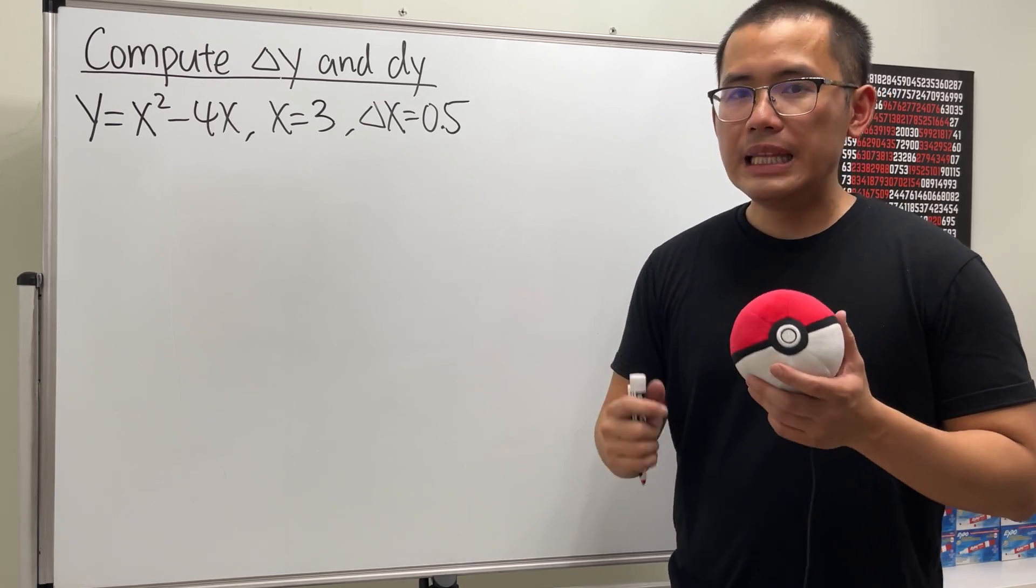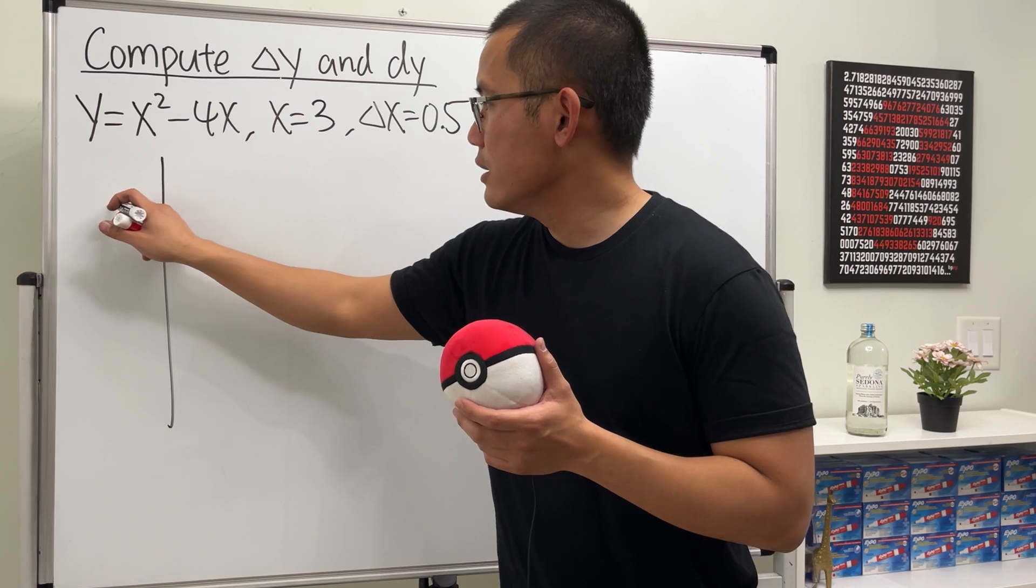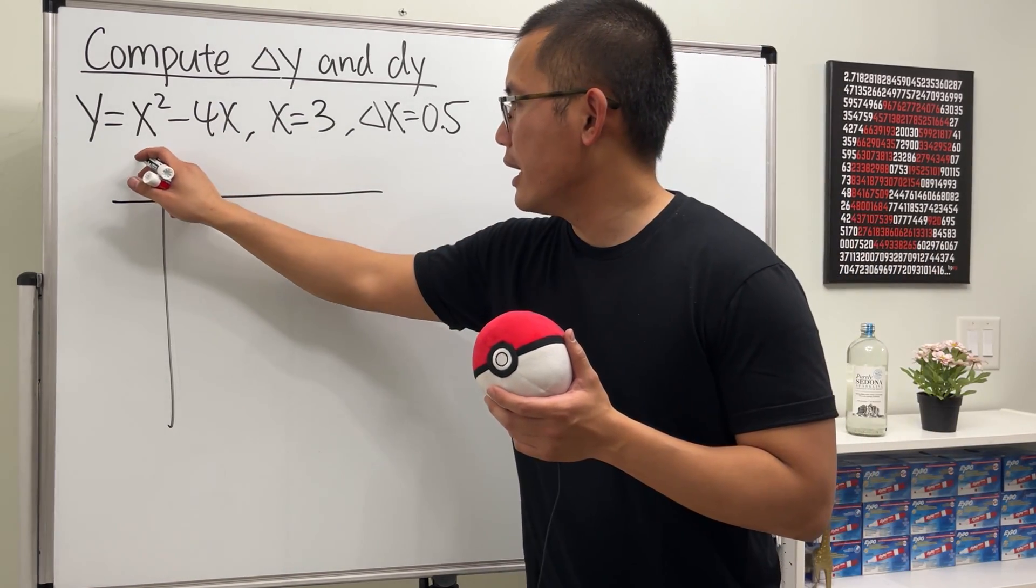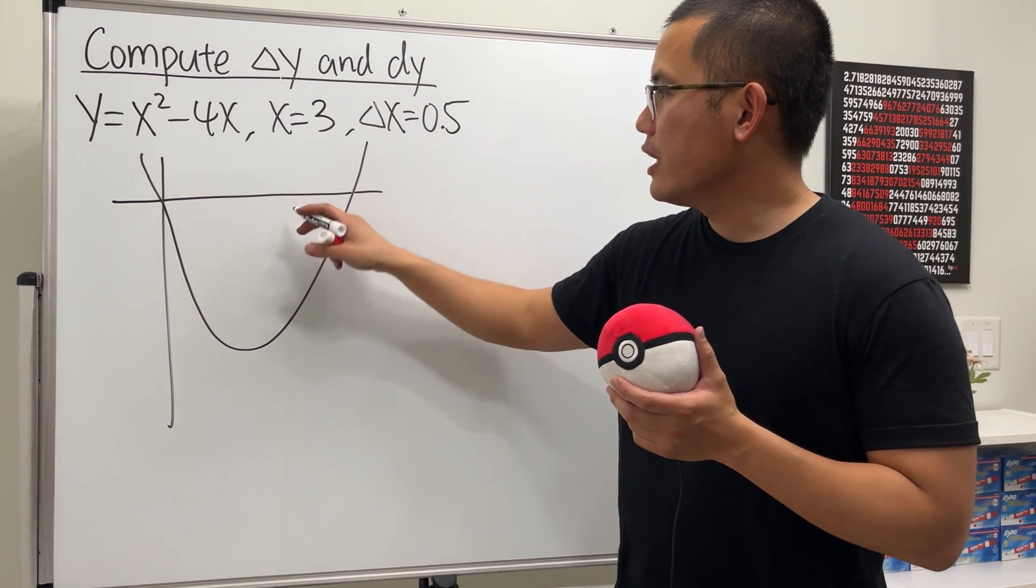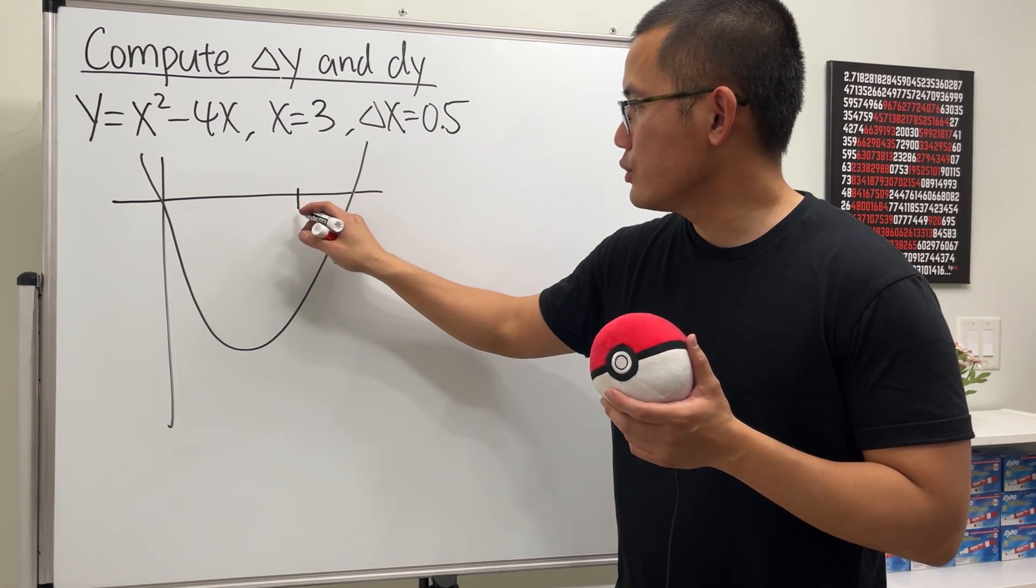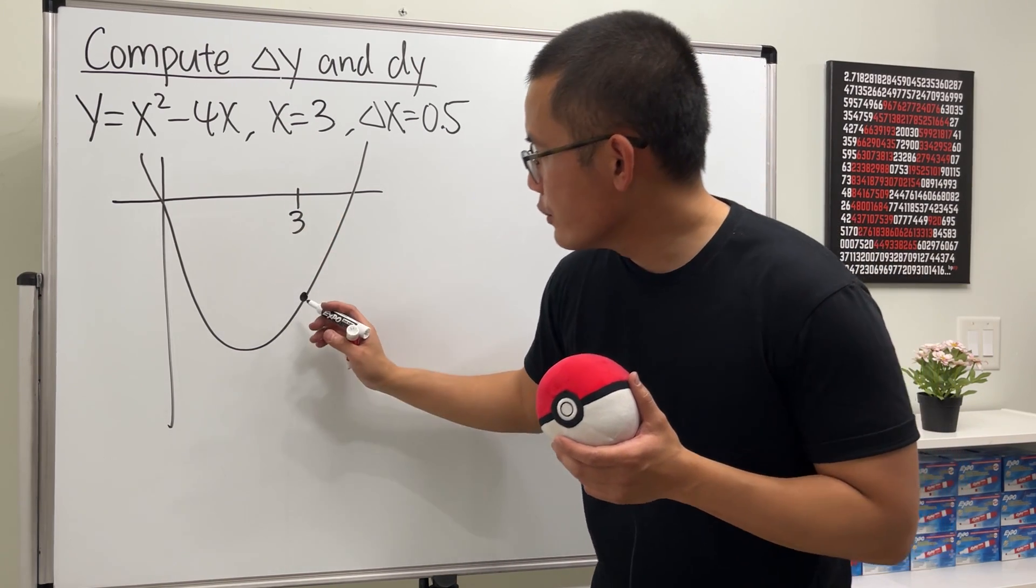Here is our y and x is 3 and delta x is 0.5. Let me give you guys a picture. First, this right here is just going to be a parabola and it opens up. Let's say it looks like this.